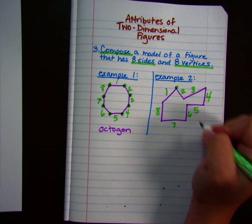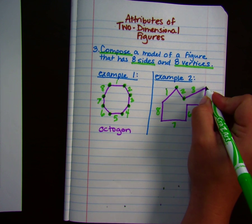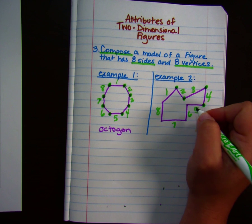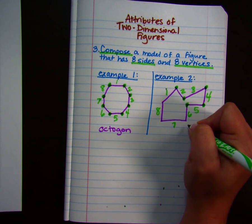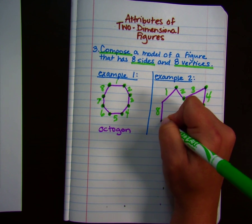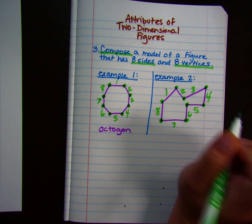One vertex, two vertices, three vertices, four vertices, five vertices, six vertices, seven vertices, eight vertices.